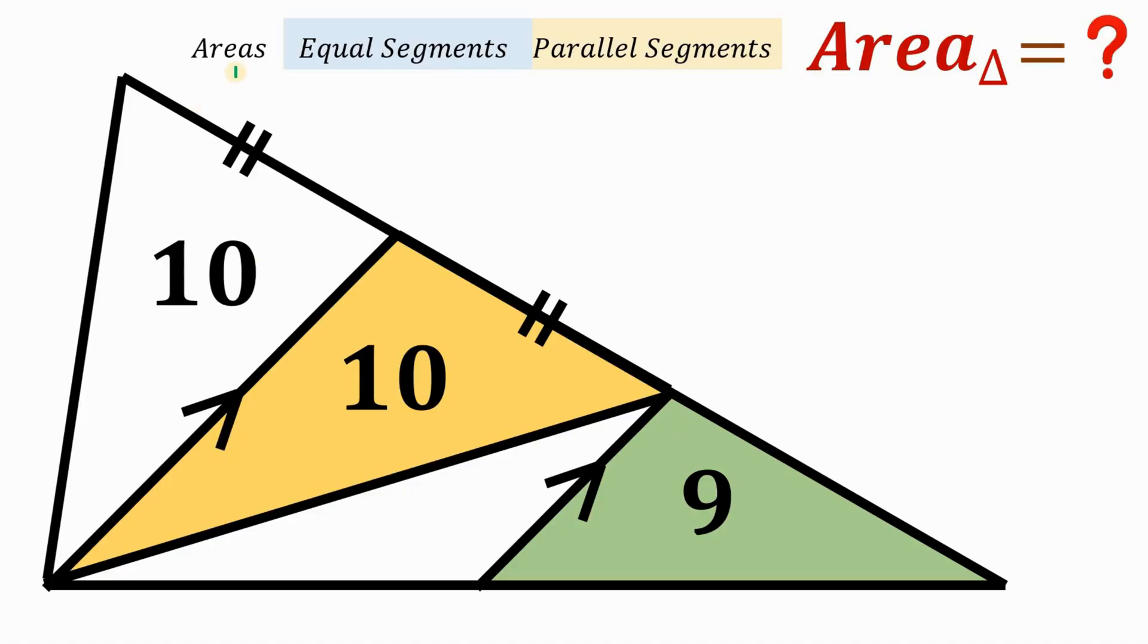Alright, now, let's use the last information, which is the area. So let's call this unshaded part as X. So unknown area as X. Now, what we're going to do is to focus on this triangle. Now, since we have two triangles with the same height, then we can use this concept.